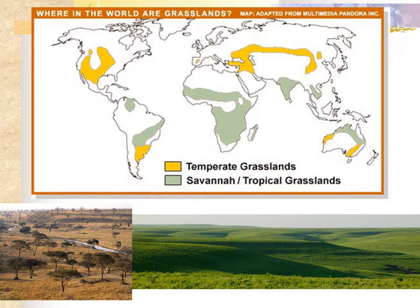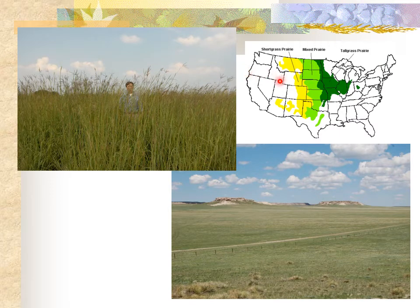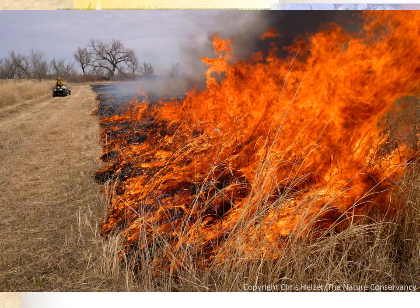Grasslands are a major ecosystem divided into two types: temperate grasslands, which we see in North America for example, and savannah and tropical grasslands. Temperate grasslands are further divided into three types: short grass prairie, mixed prairie, and tall grass prairie. In Colorado, we generally only have short grass prairie on our eastern plains. Fire plays a really important role in the seasonal life cycle of grassland ecosystems, increasing soil productivity by releasing nutrients from old dead plant matter and preparing the soil for germination of new seeds.